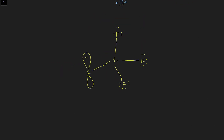Now, this lone pair of electron is present in a pure p orbital, and at the same time silicon has an empty d orbital — specifically a non-axial d orbital. Fluorine donates its lone pair to this empty d orbital of silicon. The p orbital overlaps with the d orbital, forming a pi bond. This is called p-π to d-π back bonding.